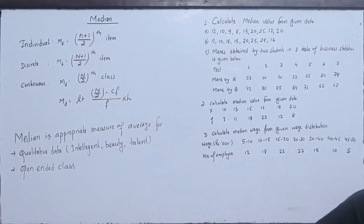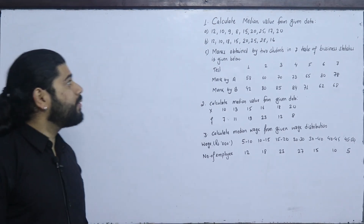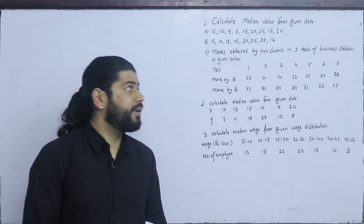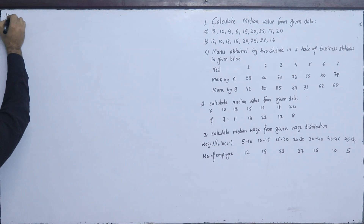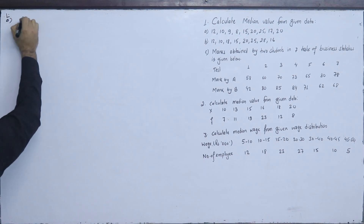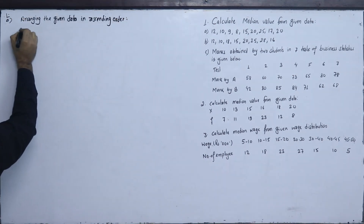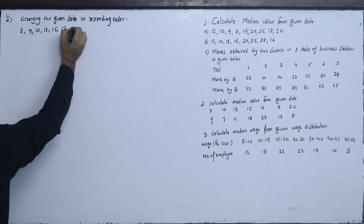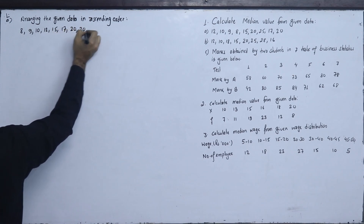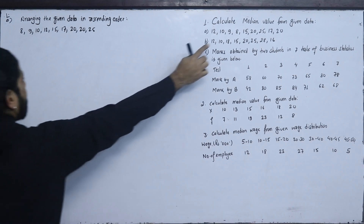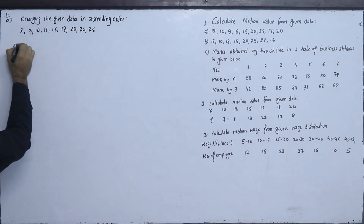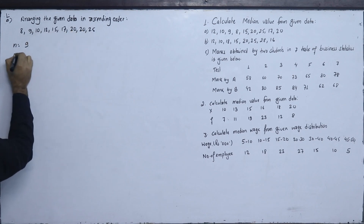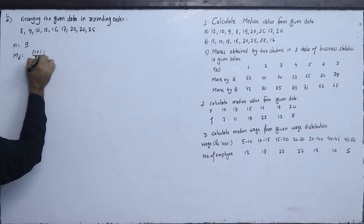Now, let us calculate the median value from the given data. We arrange the data in ascending order: 8, 9, 10, 12, 15, 17, 20, 20, 25. The median equals (n+1)/2 = (9+1)/2 = 5th item. Counting to the 5th item: 1, 2, 3, 4, 5 — the 5th item is 15.